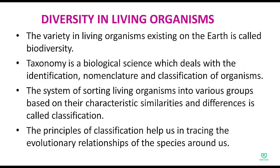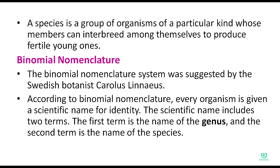We call it classification. The principles of classification help us in tracing the evolutionary relationships of the species around us. A species is a group of organisms of a particular kind whose members can interbreed among themselves to produce fertile young ones. For example, if I talk about Homo sapiens — homo is the genus and sapiens is the species.